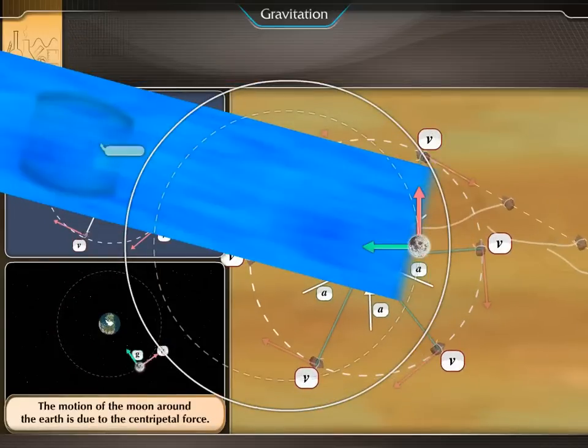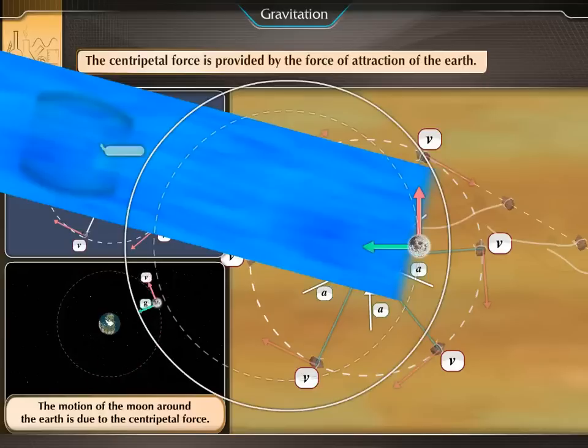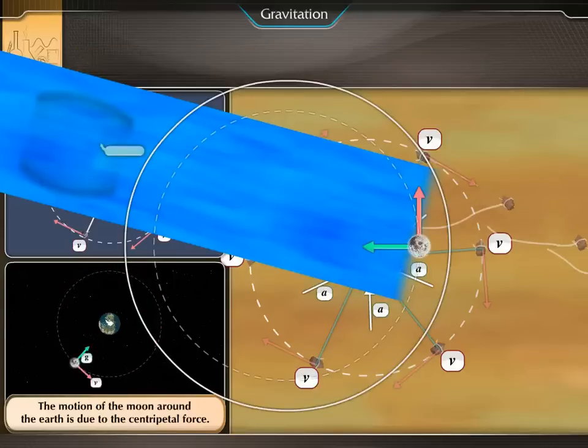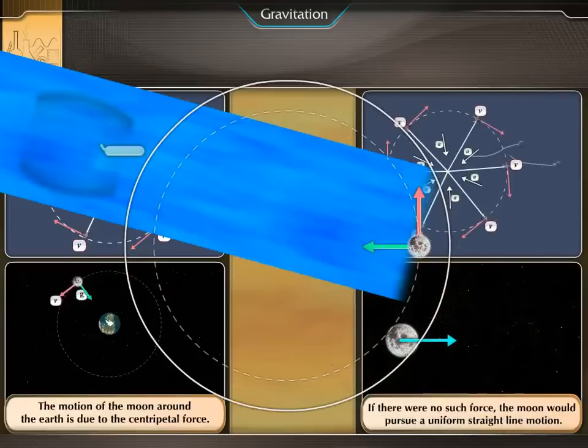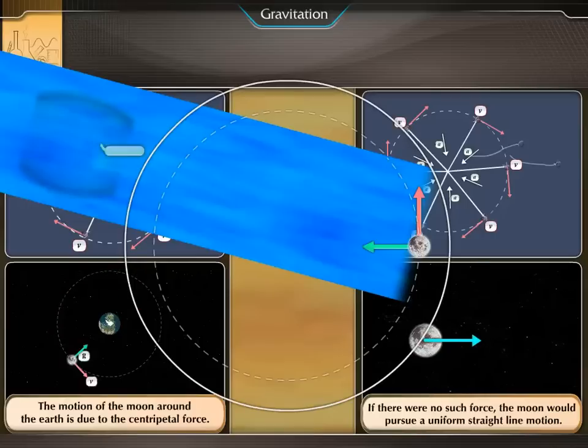The motion of the moon around the earth is due to the centripetal force. The centripetal force is provided by the force of attraction of the earth. If there was no such force, the moon would pursue a uniform straight line motion.